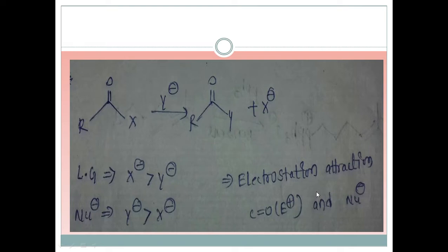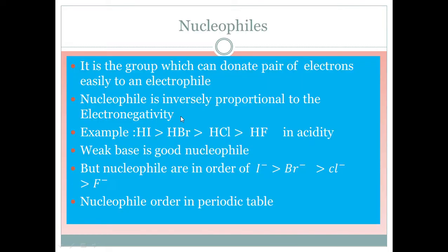Electrostatic attractions will be there between the carbonyl group and the nucleophile. Oxygen is the electronegative group which pulls electrons from the carbon, so carbon becomes more electrophilic, requiring an electron from the nucleophile. The nucleophile is the one which comes with a negative charge and provides electrons to the electrophile.